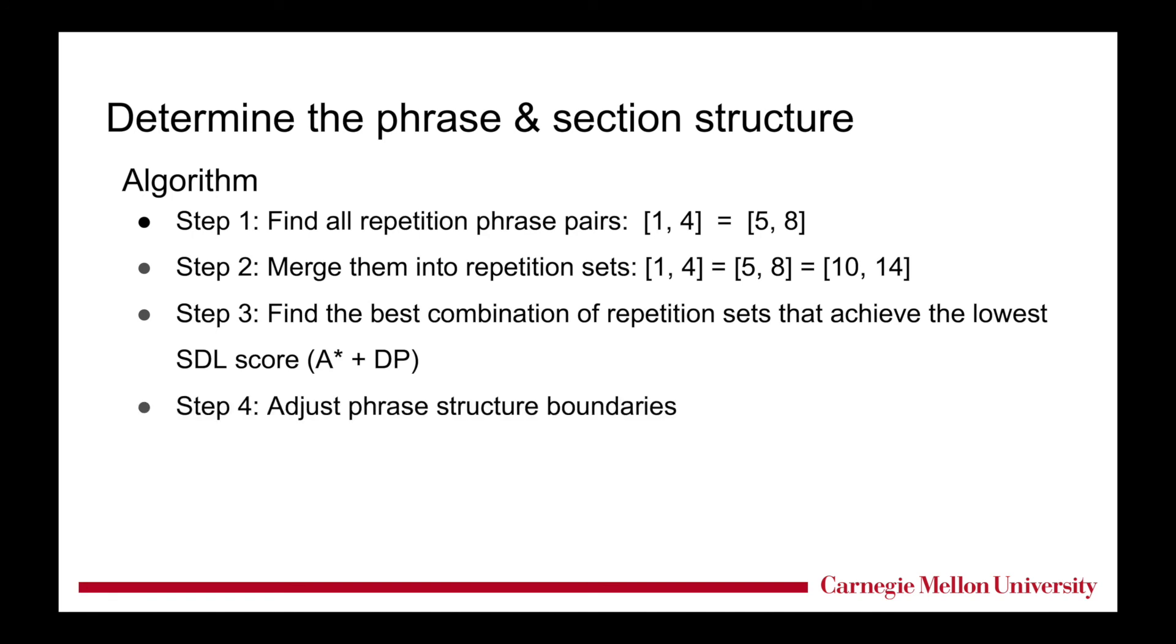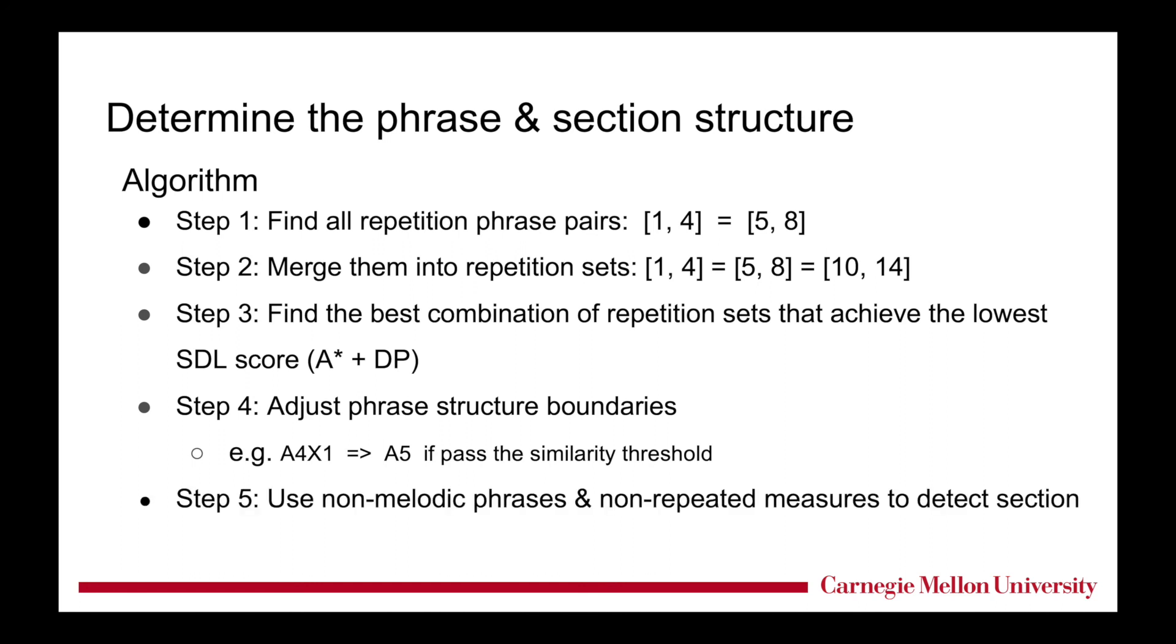We further adjust the phrase boundaries. For example, four measures of phrase A followed by one extra measure can be merged into five measures of A if passing the similarity threshold. Finally, we use the non-melodic phrases and remaining non-repeated measures to detect section boundaries. Further optimizations and approximations are also possible. You can see details in our paper and appendix.